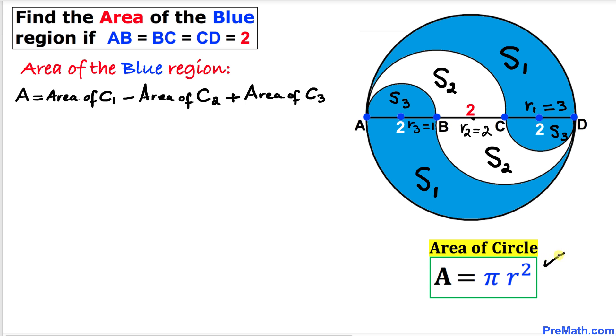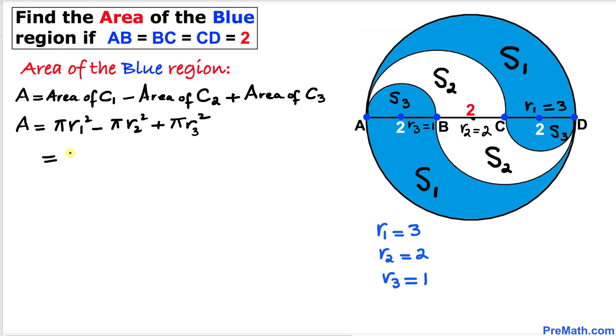Area equals π R². The area is π R1² minus π R2² plus π R3². Let's factor out π. Factoring out π gives us R1² minus R2² plus R3². We know R1 = 3, R2 = 2, and R3 = 1. Let's fill in the values.